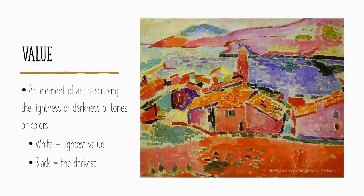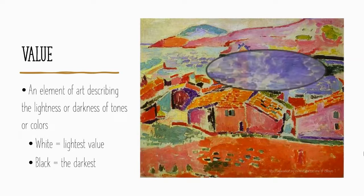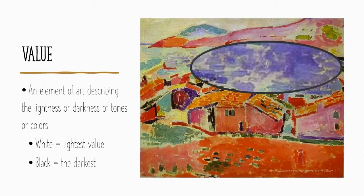Value is another important element that can add to any landscape. This describes the lightness or darkness of tones or colors. For instance, white would be your absolute lightest value and black would be the darkest. If you take a closer look at the water here in this Fauvist landscape, you can actually see the variation between dark and lighter blues.